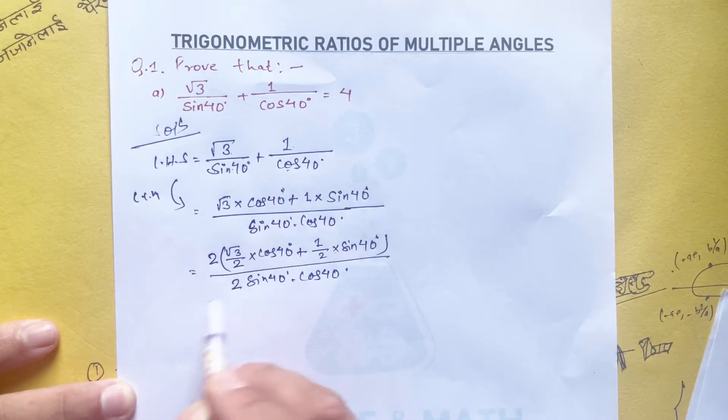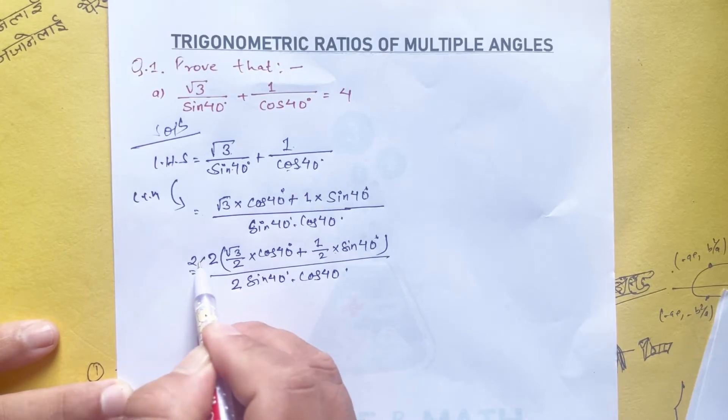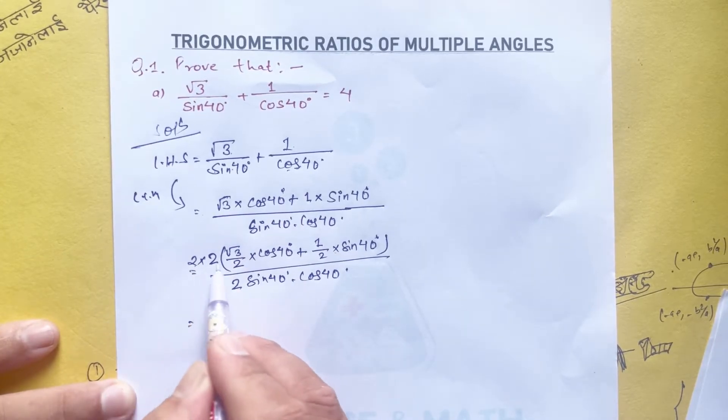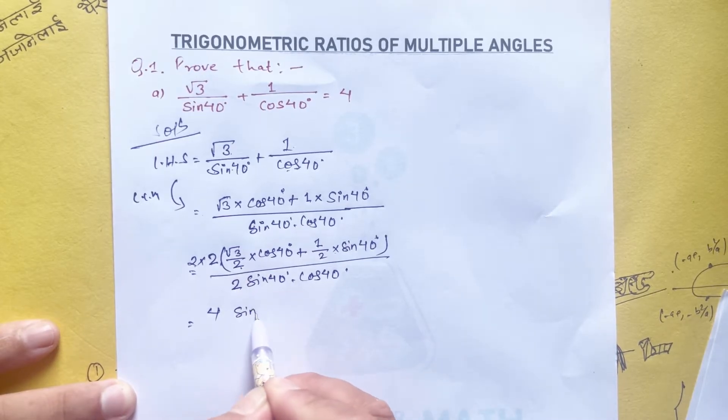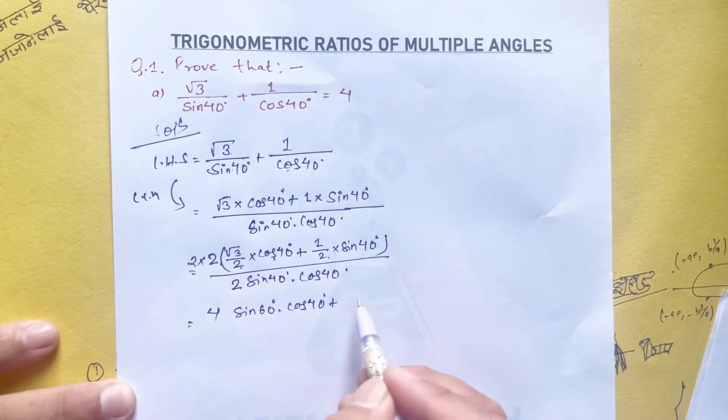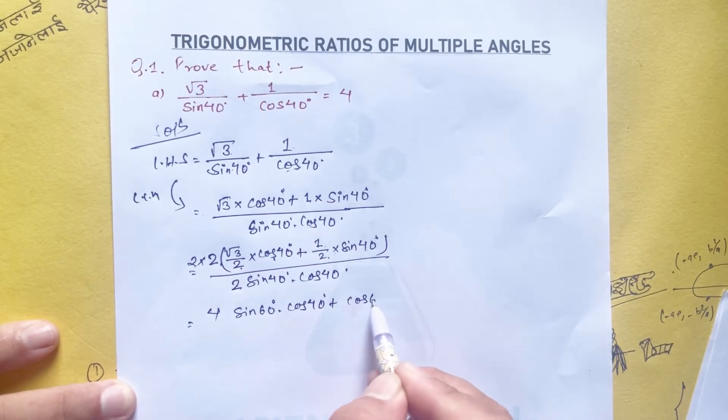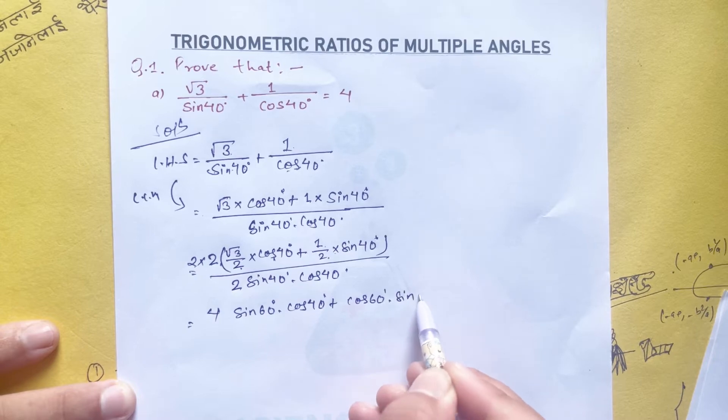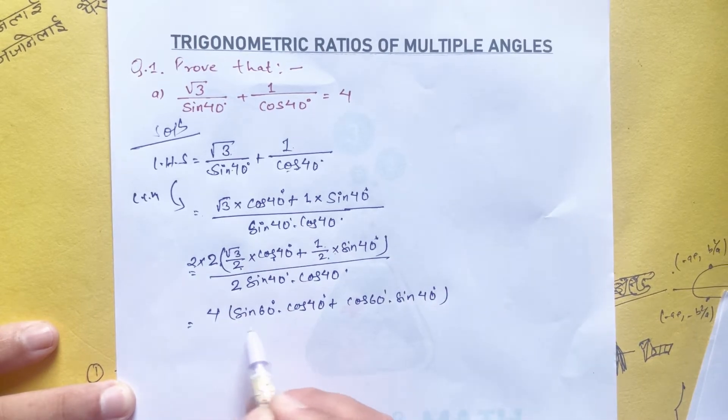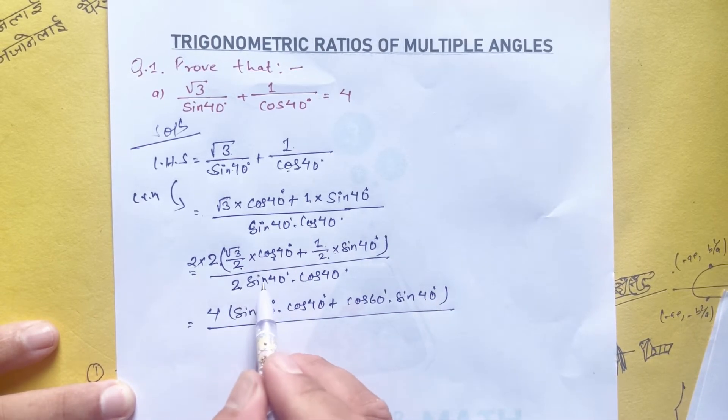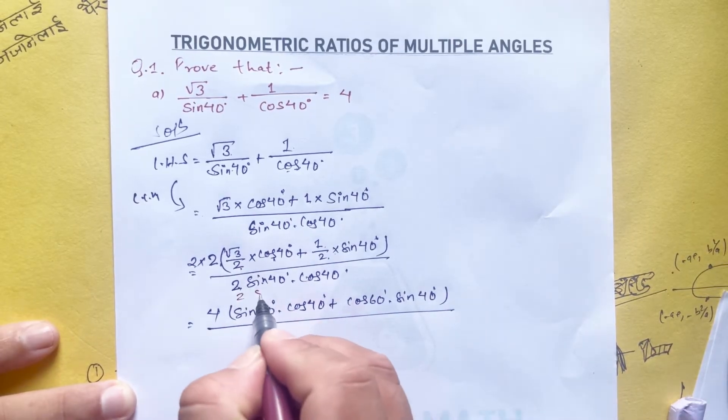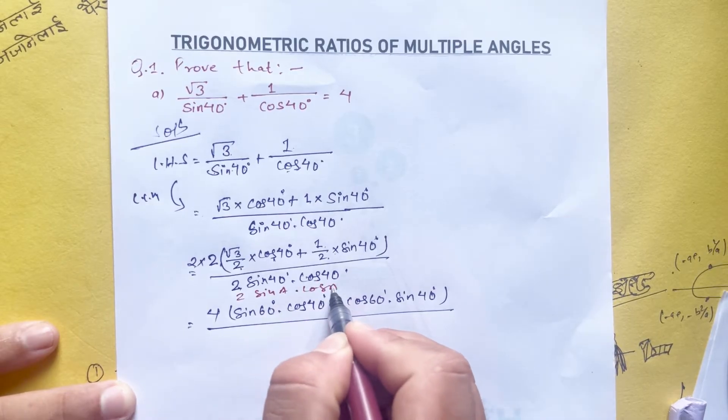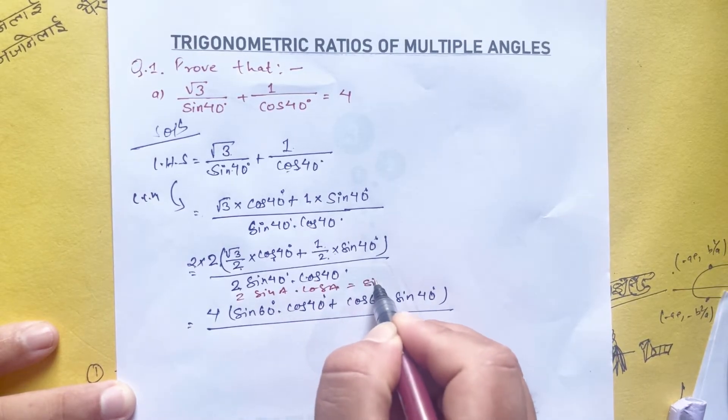Now √3/2 equals sin 60 degree, 1/2 equals cos 60 degree, so we can rewrite this as 2(sin 60 cos 40 + cos 60 sin 40) divided by sin 40 cos 40.